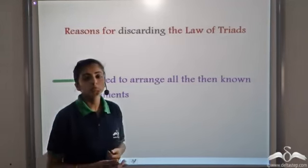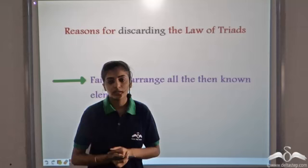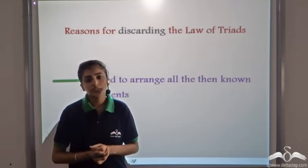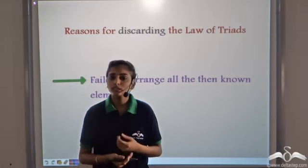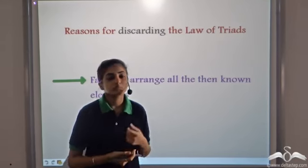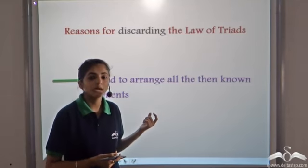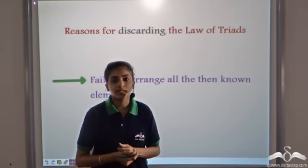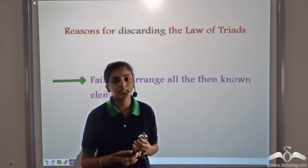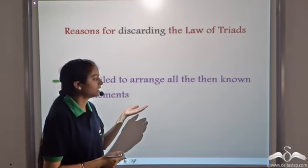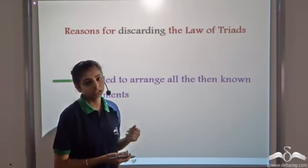But there was some problem with this law of triads. By the time Döbereiner gave his law, thirty elements had been discovered. But his law was valid for only three triads — that is, for only nine elements. It failed to arrange the remaining elements.